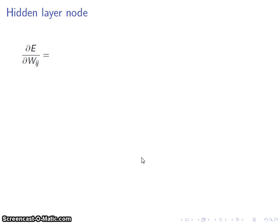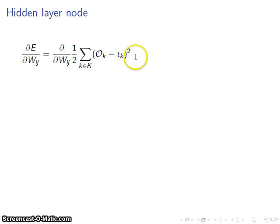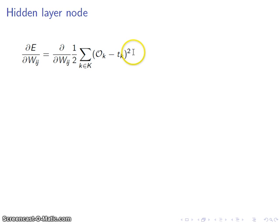We're going to finish this off by looking at how to compute the backpropagation portion for a hidden layer node. In this case, I want to take the derivative of the error with respect to the weight from i to j, where capital I is an input layer and capital J is a hidden layer. The error is just the equation we wrote down the first time: one half the sum across all the output nodes of the difference between the output and the target value, quantity squared.